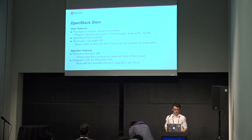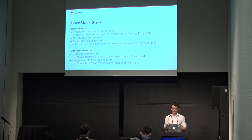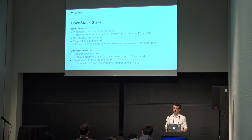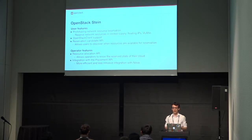For the Stein release, we are working on both user and operator features. For users, we are prototyping network reservation — planning to offer users the capability to reserve resources that are in limited supply, such as floating IPs, VLAN segmentation IDs, or VXLAN. We are also working on OpenStack unified client support; at the moment you have to use the Python Blazar client and cannot use the OpenStack unified client. We also have a new reservation candidate API that will allow users to discover when resources are available, rather than trying various parameters.